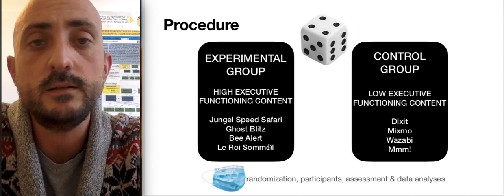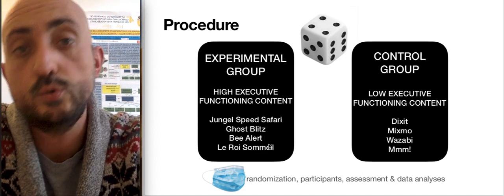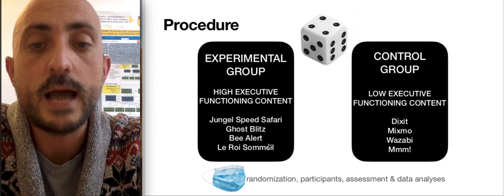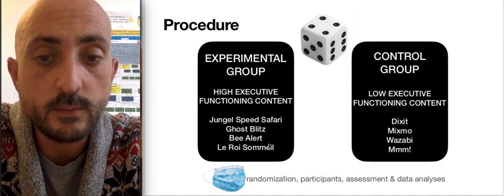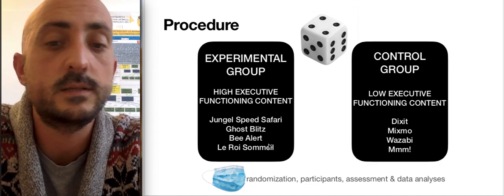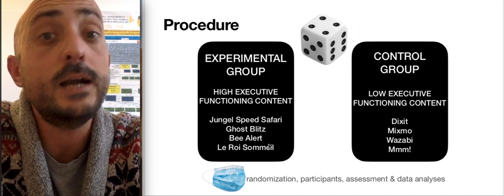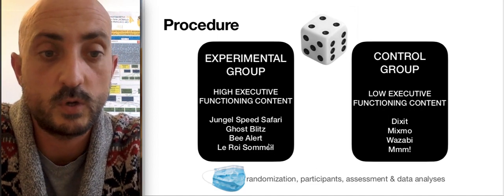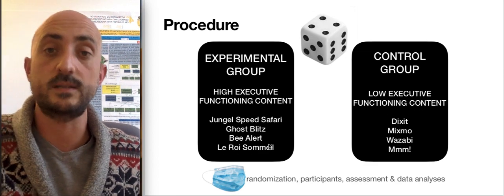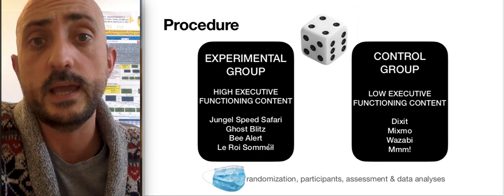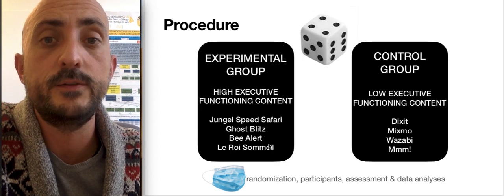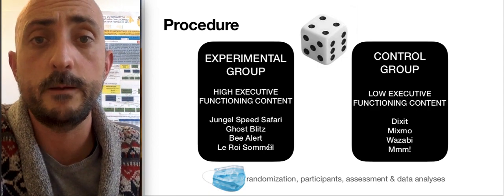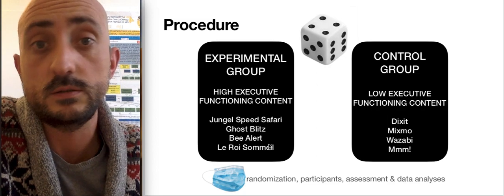We are going to assign the participants to these groups randomly into an experimental group where they are going to play with high executive functioning content games such as Jungle Speed Safari, Ghost Blitz, Be Alert and Le Roi Sommet. And another group that will also play with games with low executive functioning content such as Dixit. The games have been selected by different experts that have analyzed these games and classified them into these categories.